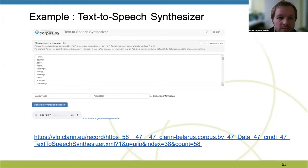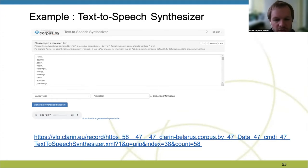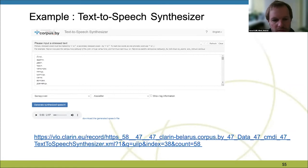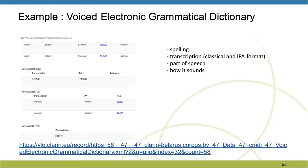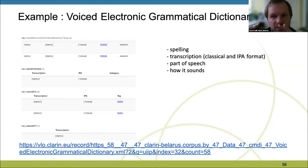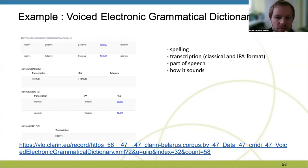Some examples of our services: text-to-speech synthesizers that synthesize Belarusian, Russian, and English speech online. These services are available on our platform corpus.by and also through VLO Clarin. Another example is a combination between a classical electronic and grammatical dictionary that can show visitors spelling, transcription, part of speech, and also combination with text-to-speech synthesis.